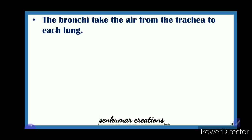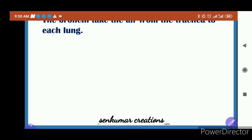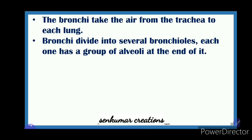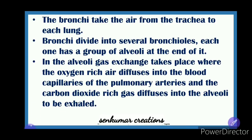The bronchi take air from the trachea to each lung. Air first passes through the nasal passage, then through the pharynx, larynx, and trachea. The trachea divides into two branches — one goes to the right lung and one to the left lung — these are the bronchi. The bronchi divide into several bronchioles, and each bronchiole has a group of alveoli at its end.